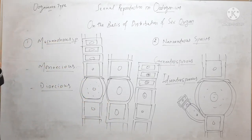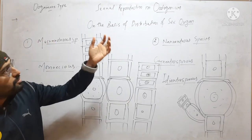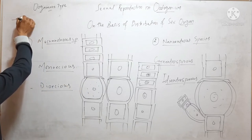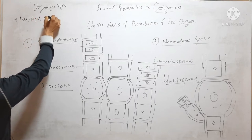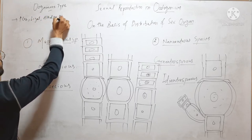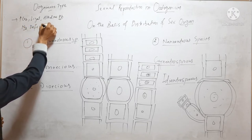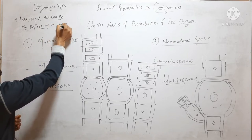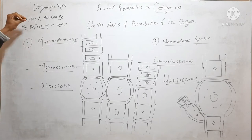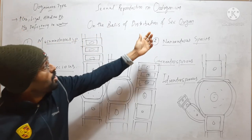So it is Oogamous type. Conditions which favour sexual reproduction in Oedogonium are high CO2 concentration, high light, alkaline pH, and nitrogenous deficiency in water — because it is an aquatic alga. These conditions: high CO2, high light, alkaline pH, and nitrogenous deficiency in water, favour sexual reproduction in Oedogonium.